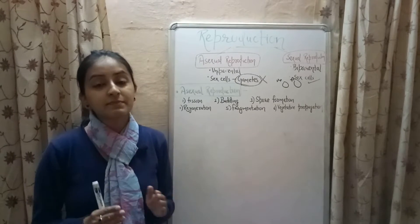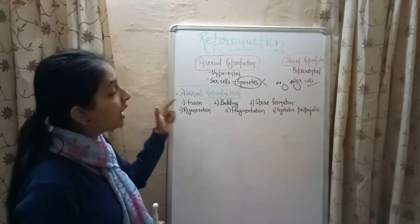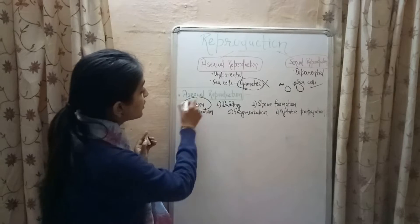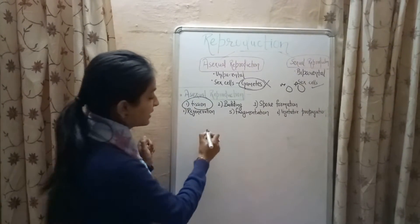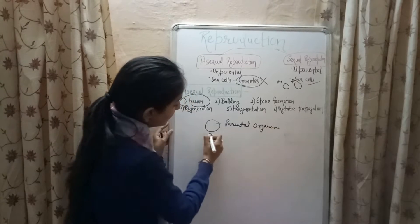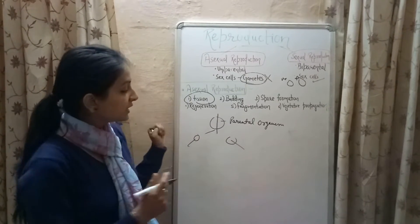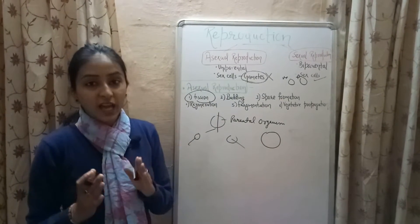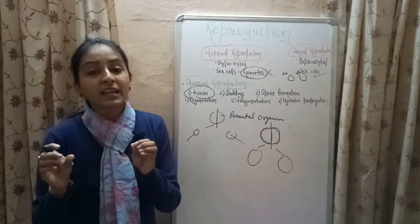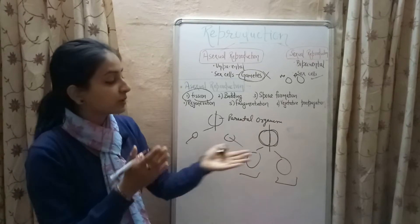In this video we'll be studying the various methods of asexual reproduction. There are six basic methods: fission, budding, spore formation, regeneration, fragmentation, and vegetative propagation. Fission is the process by which the body of the parental organism splits into two or more parts and these parts produce the offspring. Binary fission is the process in which the body splits into two parts forming two new organisms — the term binary is used where 'bi' stands for two.